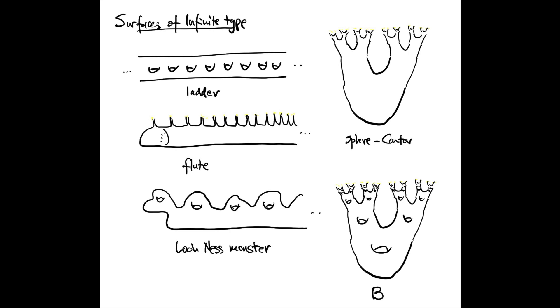The Loch Ness monster has infinite genus and one end. A sphere minus a Cantor set has infinitely many ends, one for each point in the Cantor set. And there's another surface, let's call it B, which also has a Cantor set of ends. But each one of these ends is an accumulation point of infinitely many handles. This surface is sometimes called the blooming Cantor tree surface.